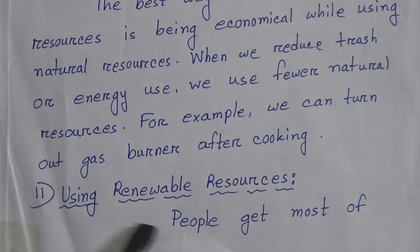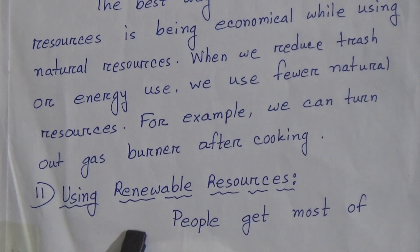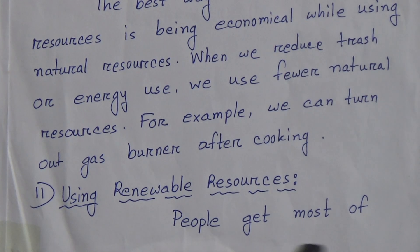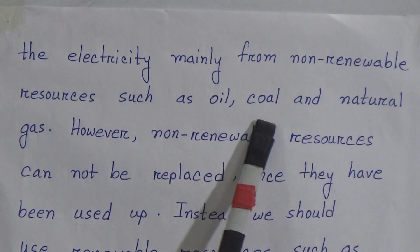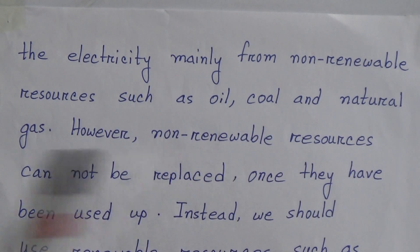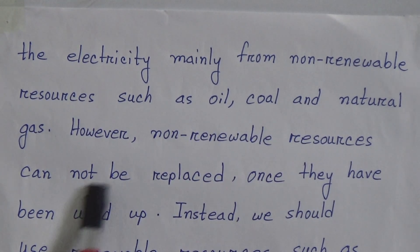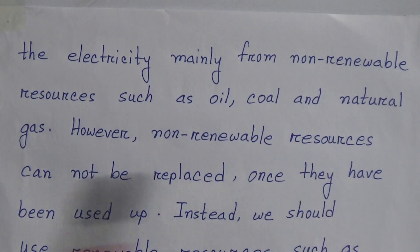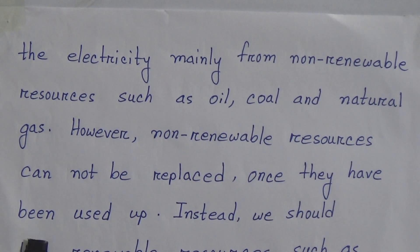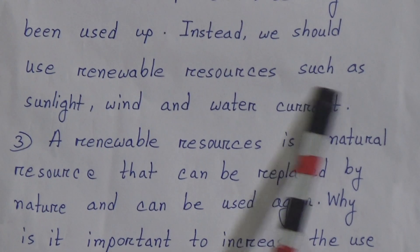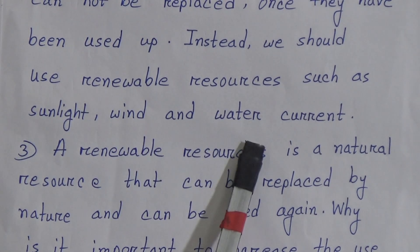Number two: Using renewable resources. People get most of their electricity mainly from non-renewable resources such as oil, coal, and natural gas. However, non-renewable resources cannot be replaced once they have been used up. Instead, we should use renewable resources such as sunlight, wind, and water current.